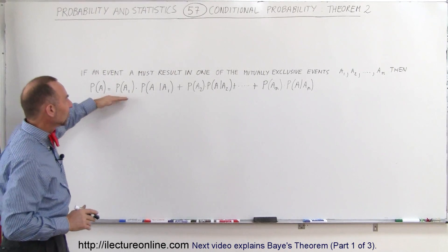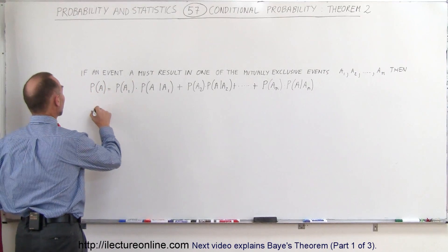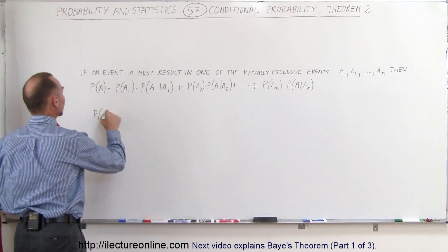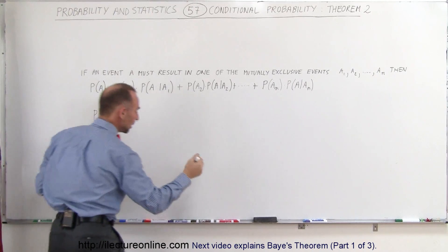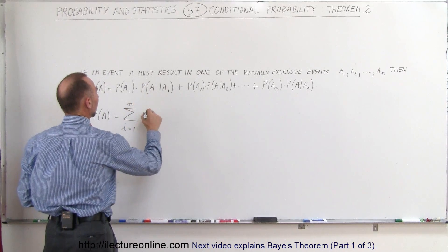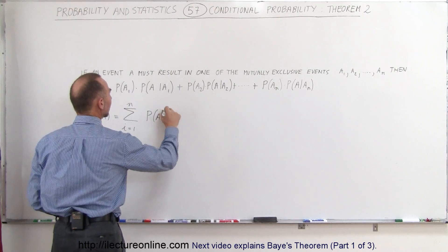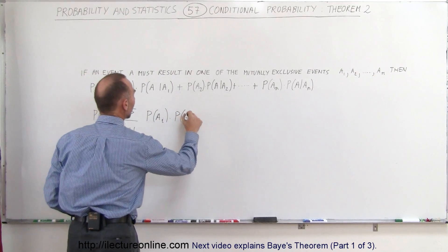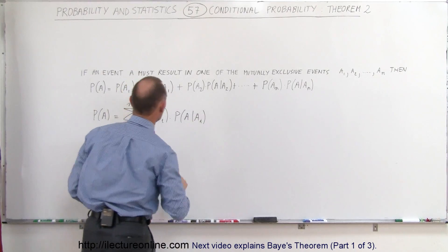We can see that this is simply the sum of a bunch of terms. In other words, we can then say that the probability that A has occurred is equal to the sum from I equals 1 to I equals N of the probability of A sub I times the probability of A provided that A sub I has occurred.